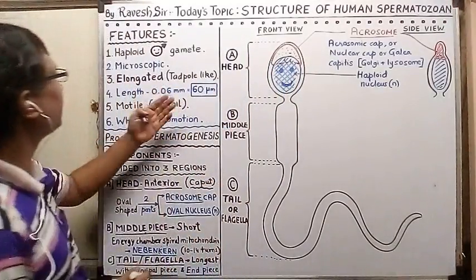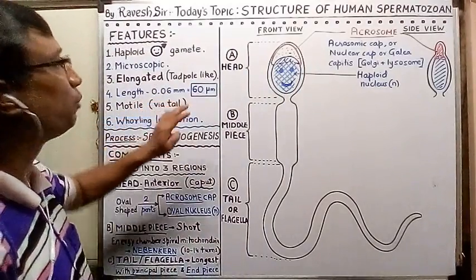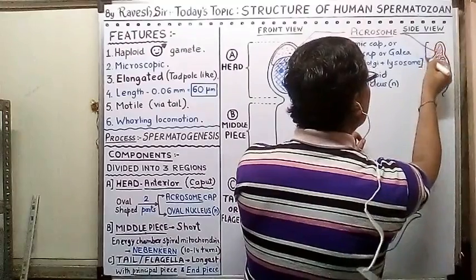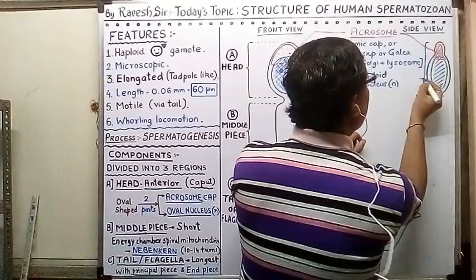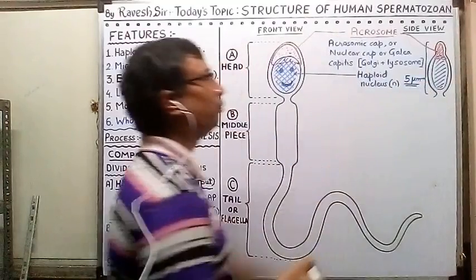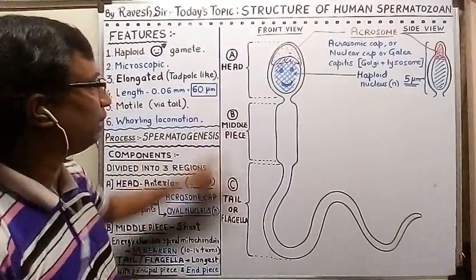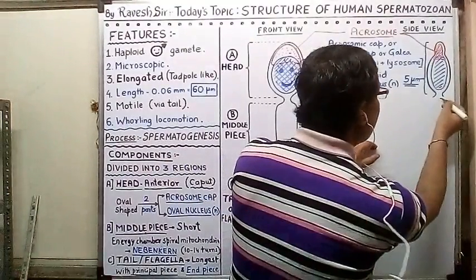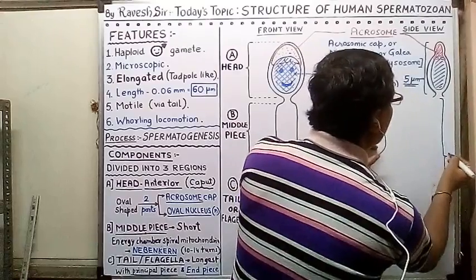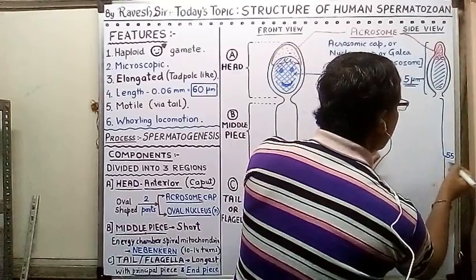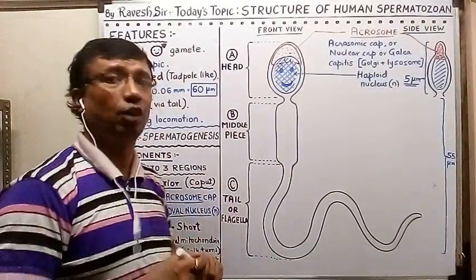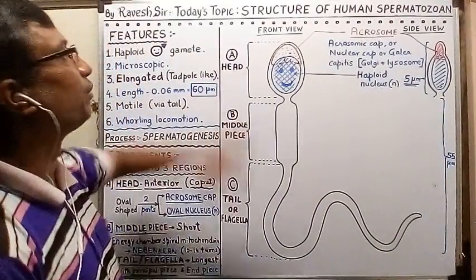Out of the total length of 60 micrometers, the head makes up about 5 micrometers in length. The remaining 55 micrometers is shared by the middle piece and tail. So the head is actually very small compared to the entire length of the sperm.